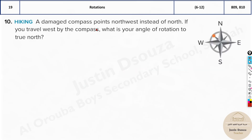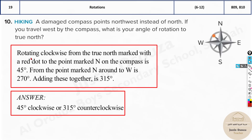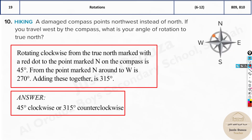A damaged compass points northwest instead of north. If you travel west by this compass, what is your actual angle of rotation to true north? The answer is 45 degrees clockwise. The broken compass is off by 45 degrees, so west on the broken compass is actually southwest on true north. Alternatively, going counterclockwise it would be 315 degrees, since 360 − 45 = 315.